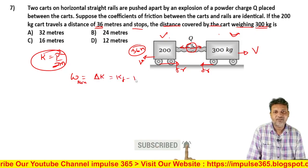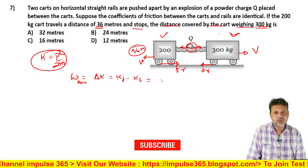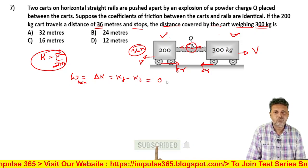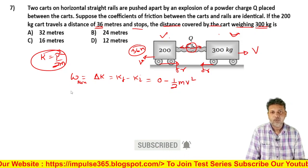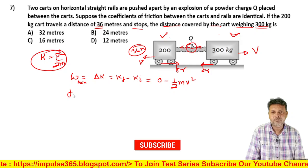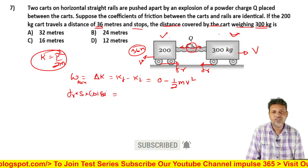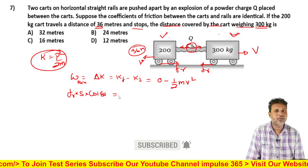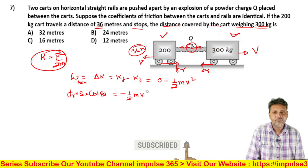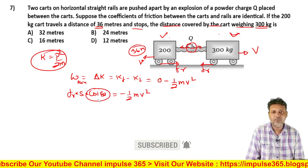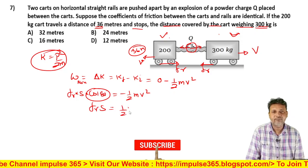The change of kinetic energy is K final minus K initial, which equals 0 minus K initial. The friction force into displacement into cos 180 degrees - the displacement and force are in opposite directions.